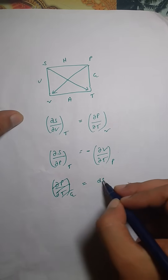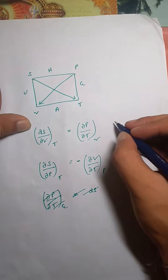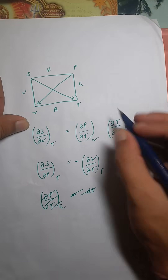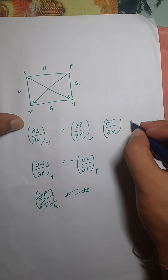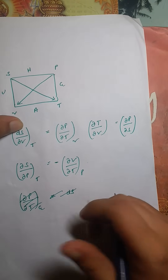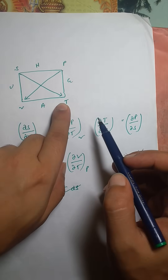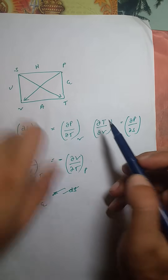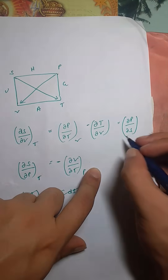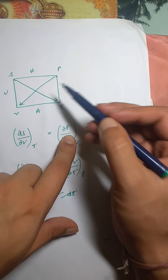For the third relation, take (∂T/∂V). The opposite of T and V is P and S, so we write (∂P/∂S). The arrow goes from S to T but we need T to S — so a minus sign — at constant S. For (∂P/∂S), the arrow goes from P to V, which is exactly the direction we want, at constant volume. Third Maxwell relation: (∂T/∂V)_S = -(∂P/∂S)_V.